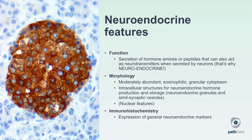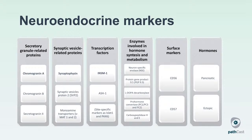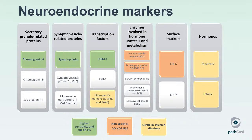The immunohistochemical features are sustained by the expression of general neuroendocrine markers. The most accurate neuroendocrine markers are chromogranin A, synaptophysin, and INSM1 — the novel marker insulinoma-associated protein 1 — which are the most sensitive and specific markers to be used in routine diagnostics. By contrast, neuron-specific enolase, PGP9.5, and CD56 are to be used with caution, as they are non-specific. In the context of pancreatic NEMs, hormone immunohistochemistry may be useful for defining a specific tumor type.